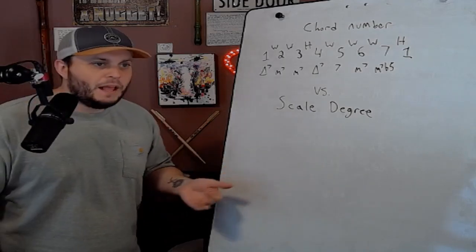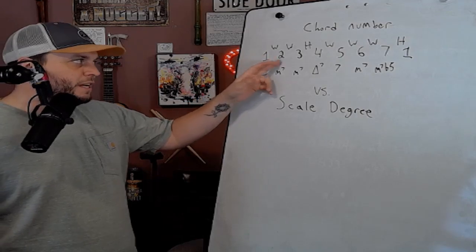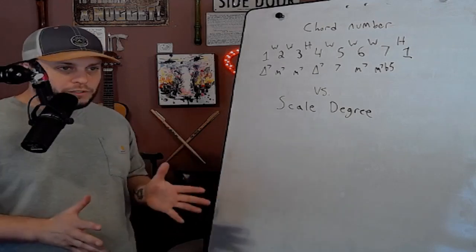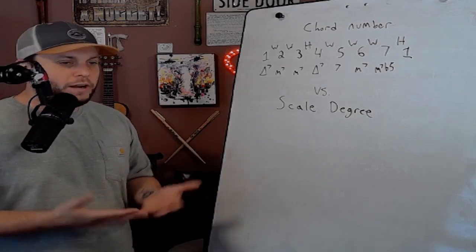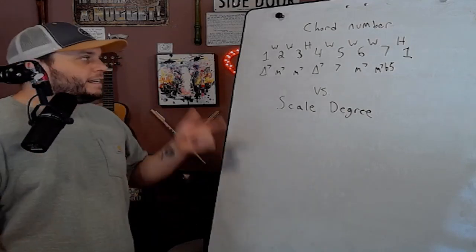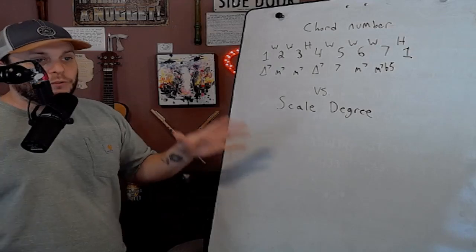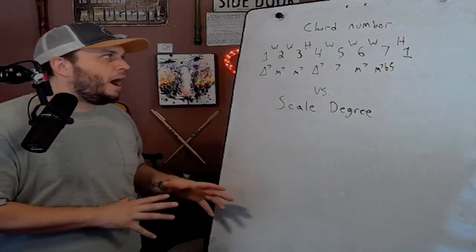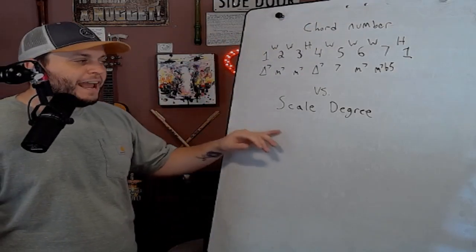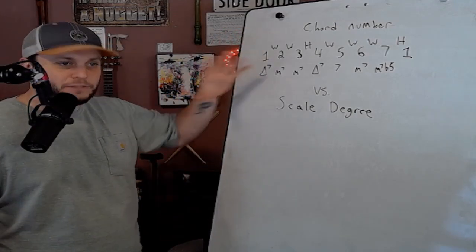Let's use an example. We're in the key of C right now and I say go to the two chord. That's D minor. We've gone up a whole step from C to D and it's a minor seven. So D minor seven would be the two chord, but also inside of any particular chord, the two of that chord is an E and here's the way you do it. You reapply the major scale to the chord we're talking about.